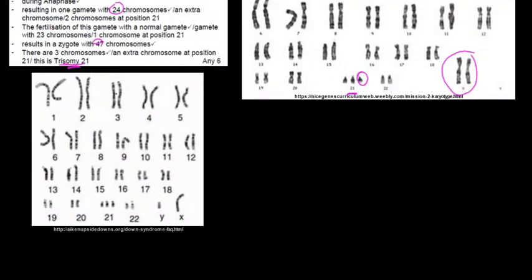Looking at this karyotype, at chromosome pair number 21, there is that extra chromosome. This person with Down syndrome is a male because there is an X and a Y chromosome present.